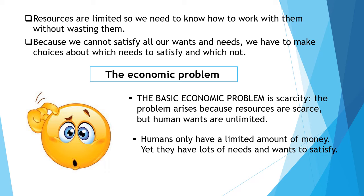Another example: humans only have a limited amount of money yet they have a lot of needs and wants to satisfy. It may happen that I only have one thousand rand in my pocket but I have a lot of things I want to buy, and when I calculate those things they cost more than the thousand itself. So you can see I have a limited amount but I have a lot of needs and wants to satisfy.